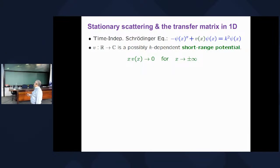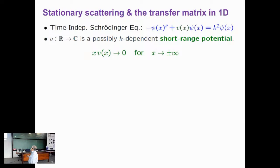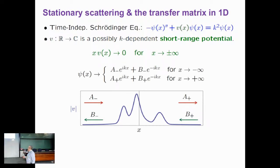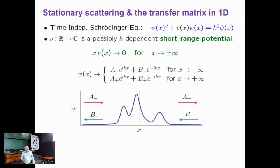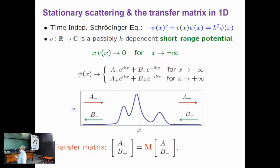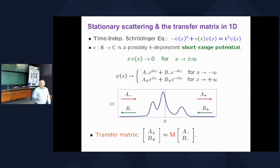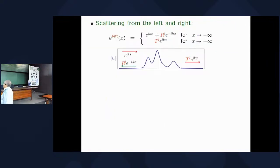By stationary scattering I mean the standard textbook scattering problem. You have a short-range potential, which dies off faster than one over distance, and I allow it to be complex and even energy-dependent. Once you have this condition on the rate of decay, it allows you to prove that asymptotically all solutions of the Schrödinger equation are plane waves. So at plus or minus infinity, you have right-going and left-going plane waves. A's and B's are the coefficients. There is a two-by-two transfer matrix connecting these coefficients, unique by this condition. This is very old — 1940s.